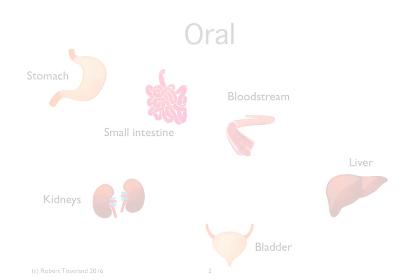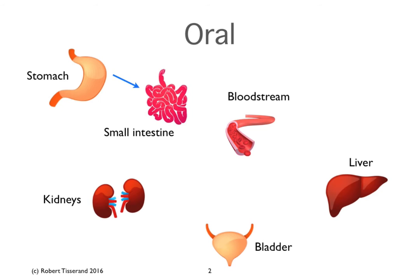After we ingest an essential oil, it passes into the stomach, then to the small intestine, and from both of those into the bloodstream. It specifically passes into the hepatic portal vein, which draws blood directly from the digestive system and passes it directly to the liver.